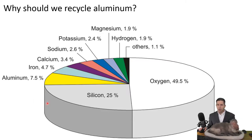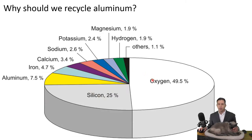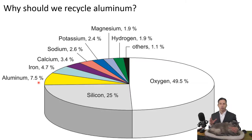Aluminum is not a rare element — that's the first thing we need to establish. If I look at all of the common elements in the crust of the Earth, number one is oxygen, number two is silicon, number three is aluminum. About seven and a half percent of everything in the crust is aluminum. It's not pure aluminum metal; it's aluminum mixed in with other elements to form minerals. So we don't recycle aluminum because aluminum itself is rare.